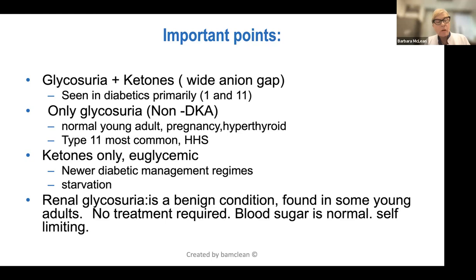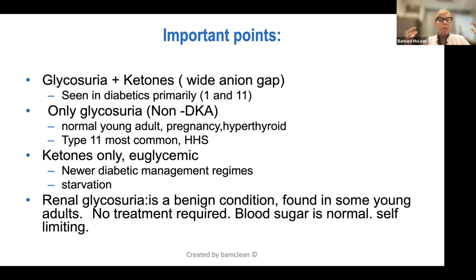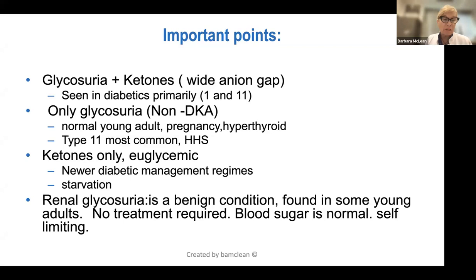A third category that most of us don't recognize are patients who have ketonemia and therefore a wide gap and acidosis, but they are euglycemic — their glucose is normal but they have ketosis. These patients are tricky because you want to stop their ketosis, and in this case it must be ketoacidosis. You must have a beta hydroxy, you must have a wide gap, but your glucose is normal.